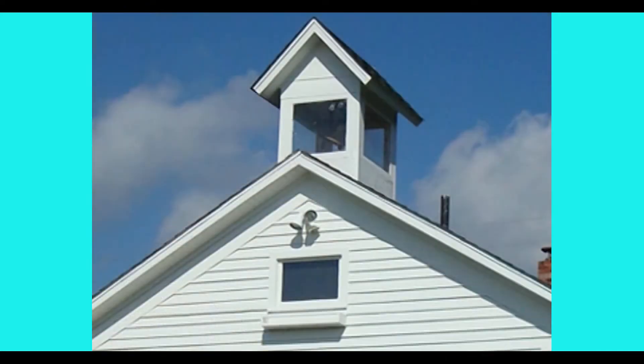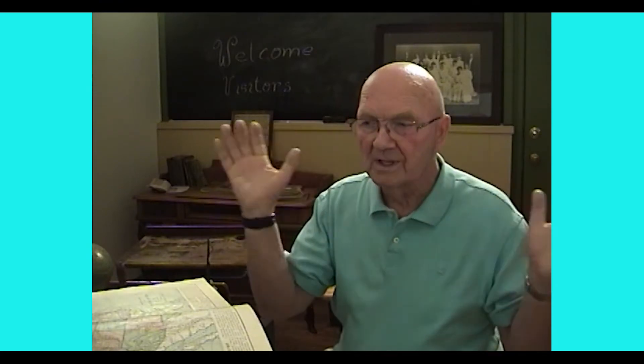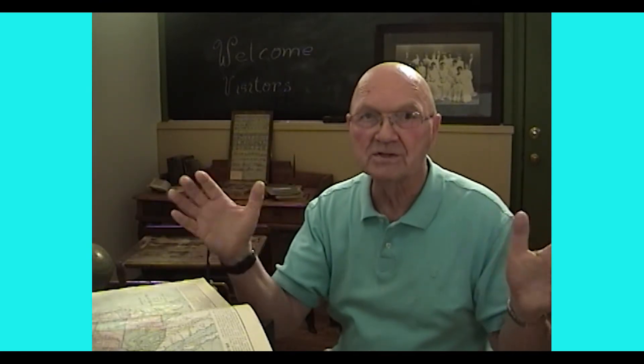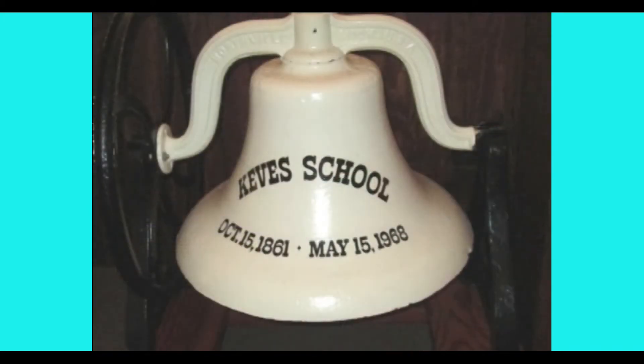Now, the secret about those particular schools is that not only were they one-room schoolhouses, but on top of the school, there was a big bell. And the bell was used to call the children to school. And if you lived within the area where you could hear the bell, then that was the school that you attended. Now, we have the bell from the Keeve School here in the museum.